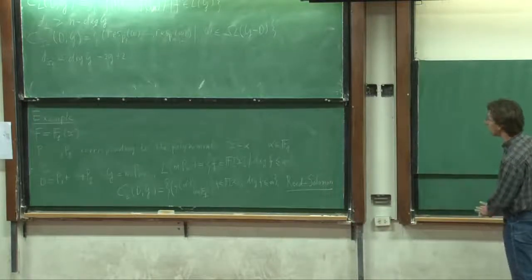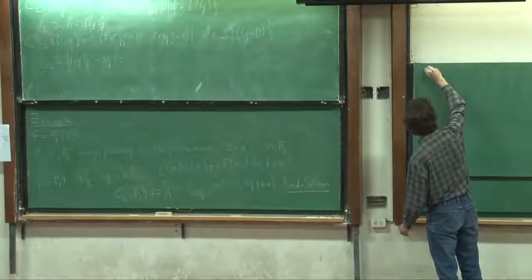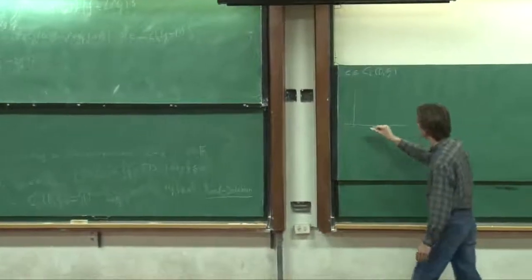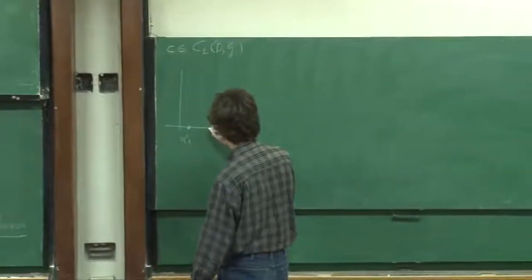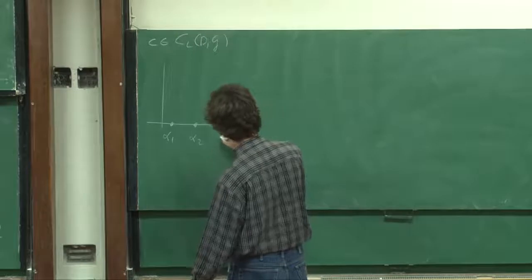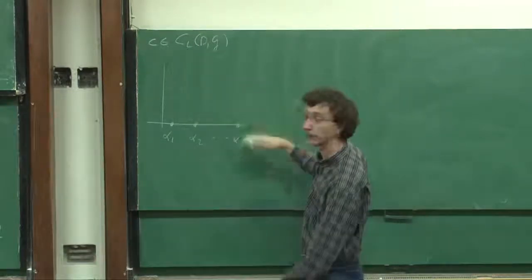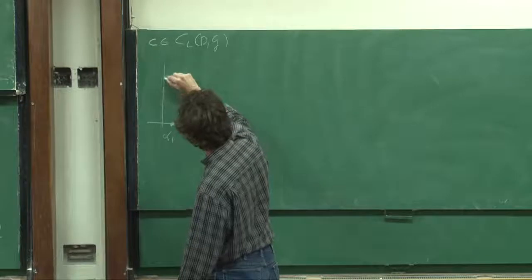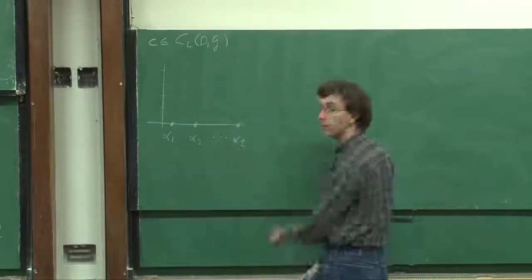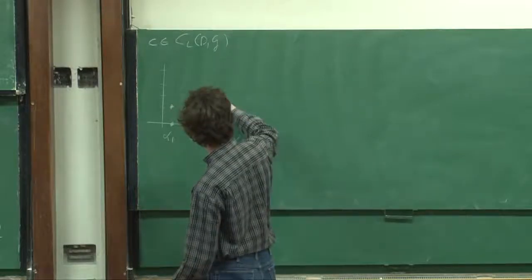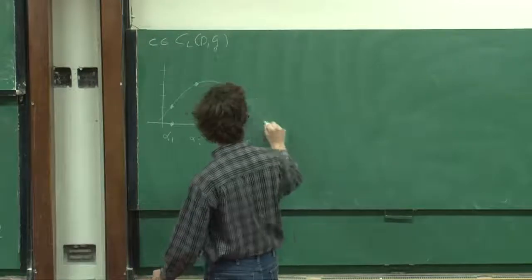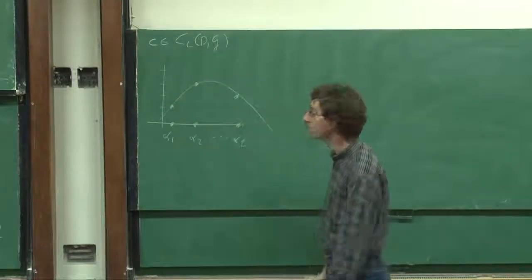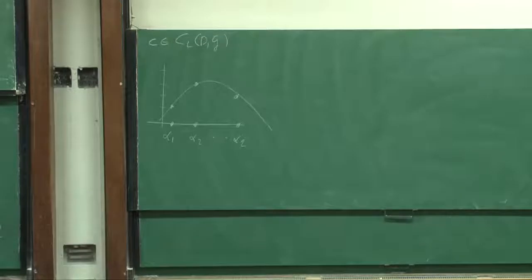We can make a nice picture of this. If we put all the elements of the finite field on an axis—as if they were the real numbers—then a codeword consists of evaluations of some polynomial at these values, giving points like a polynomial graph. We can think of a codeword in this way, where it is really the second coordinate of these points that appears in the codeword itself.